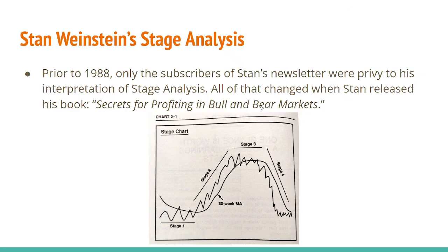Next we have Stan Weinstein's stage analysis. Prior to 1988, only subscribers of Stan's newsletter were privy to his interpretations of stage analysis. But thankfully after 1988, Stan released his book, Secrets for Profiting in Bull and Bear Markets. We have stage one, stage two, stage three, stage four — also known as accumulation, markup, distribution, and markdown. Stan added an additional element when he added the 30-week moving average. So not only are you looking at price action in relation to support and resistance, you're also looking at it in relation to a moving average, which helps identify which stage an asset is in based on the slope of the moving average. We'll get into that more in future videos.